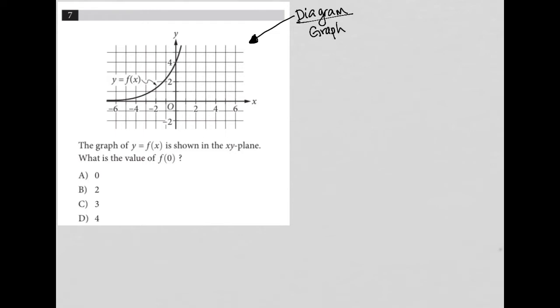So what do we know about this graph? Well, we see our x and y axes here. We have this y equals f of x, and that's pretty much all we have.